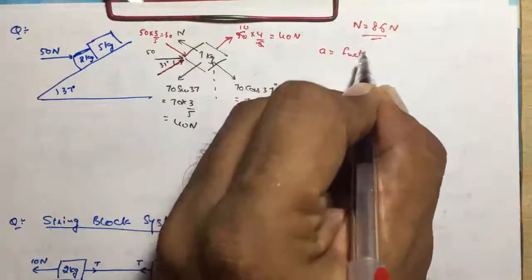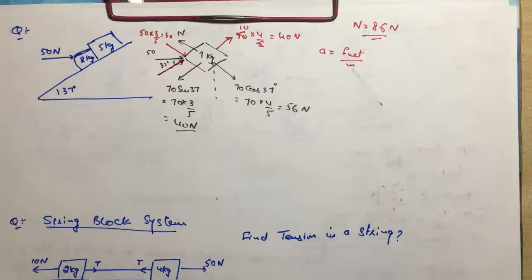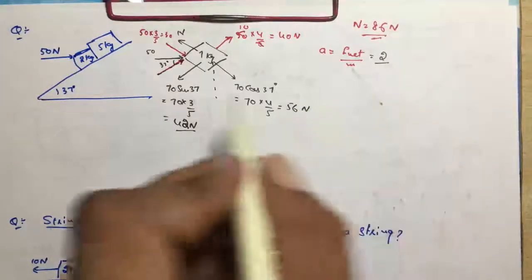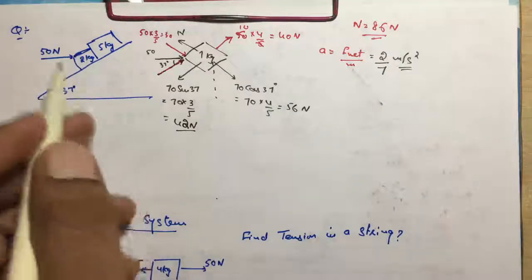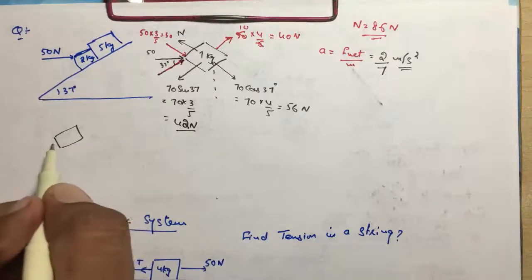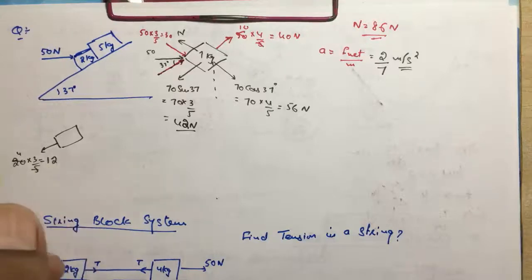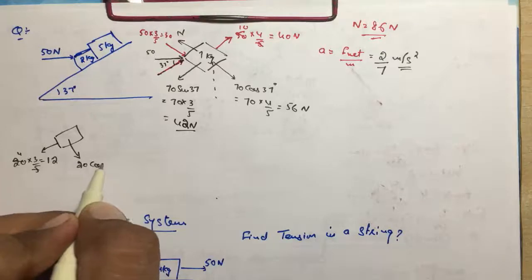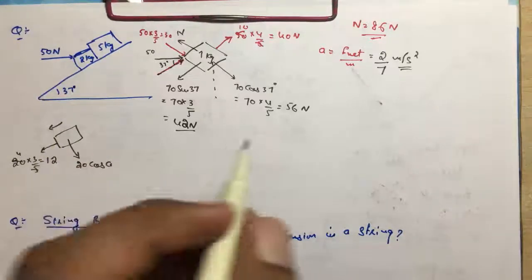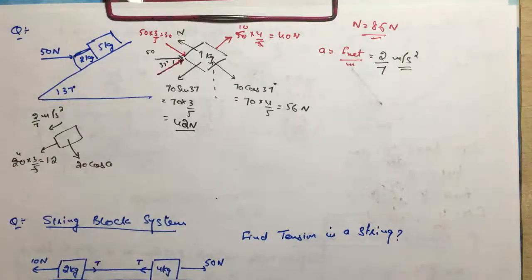That will be 50 sin 37 = 50 × 3/5 = 30 newton. तो यह जो block है इसका N की value — यह 56 और 30 — 86. तो N की value आई 86 newton. और यह जो acceleration है, system की — acceleration होता है F net upon mass. F net कितना लग रहा है: नीचे की तरफ 42 (correction: 42), ऊपर की तरफ 40, तो 2 newton नीचे की तरफ force लग रही है। 2 by 7 meter per second square — this is the acceleration of the whole system.